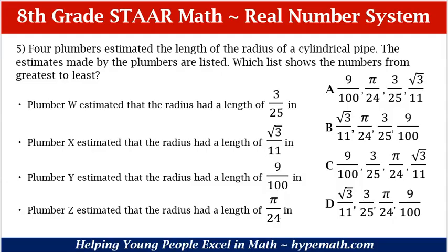Let's look at our answer choices. Remember, we are listing the numbers from greatest to least. A: 9 over 100, pi over 24, 3 over 25, or the square root of 3 over 11. B: the square root of 3 over 11, pi over 24, 3 over 25, 9 over 100. C: 9 over 100, 3 over 25, pi over 24, the square root of 3 over 11. Or D: the square root of 3 over 11, 3 over 25, pi over 24, or 9 over 100.